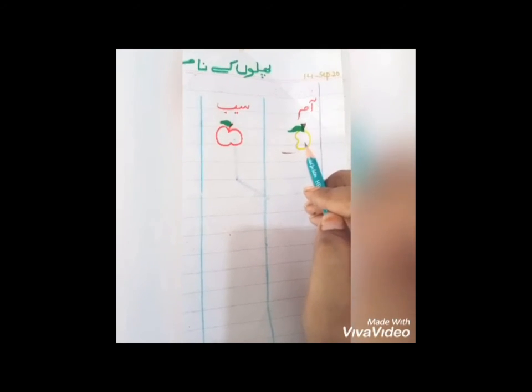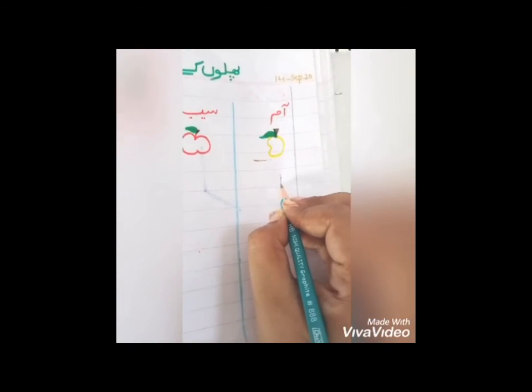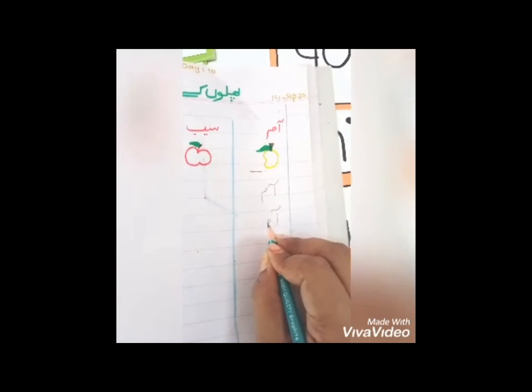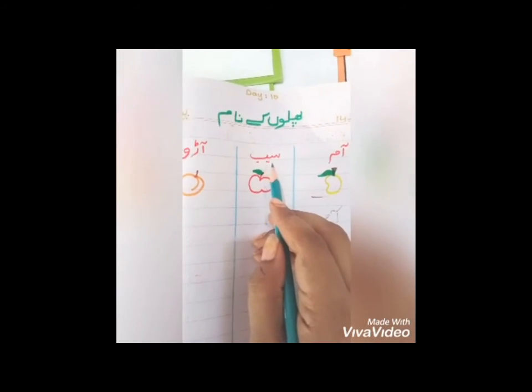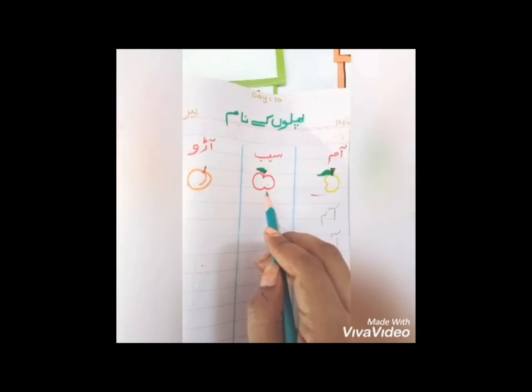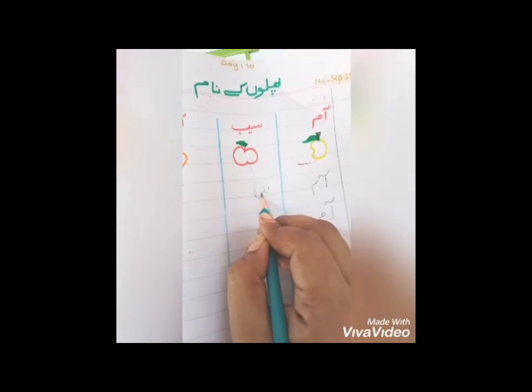Which fruit is this? Which picture do you see? Read with me — which picture is this? Aam (mango). What will we write here? Aam — how? Alif madda meem — aam. The second fruit — which fruit is this? Seb (apple). Seen, ye, be — seb. Which picture is this? Seb. And in English we also call it apple.